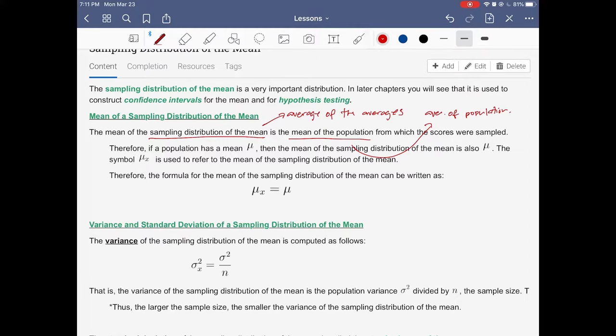So when we talk about mean of the sampling distribution, of course you're going to find all samples first before you get the sampling distribution. And then you find the mean of every sample. When we talk about the mean of the sampling distribution, it's just like getting the average of the averages, or average of the sample means, or just simply getting the average of your population using the raw data that you have.